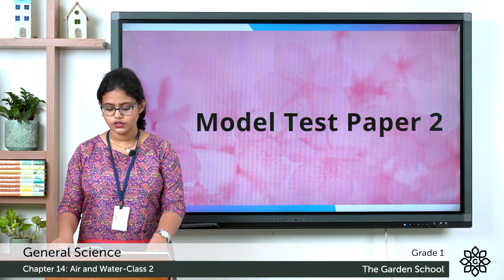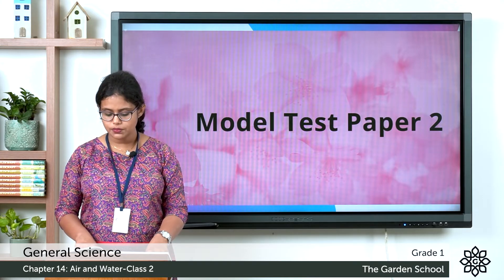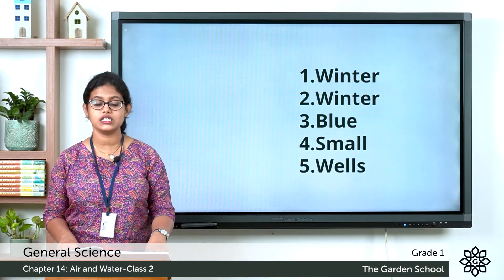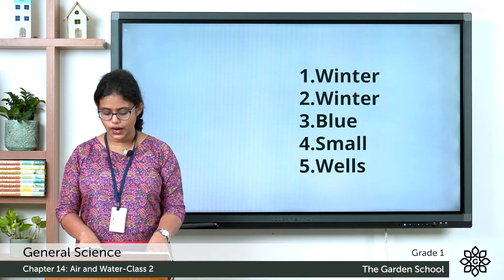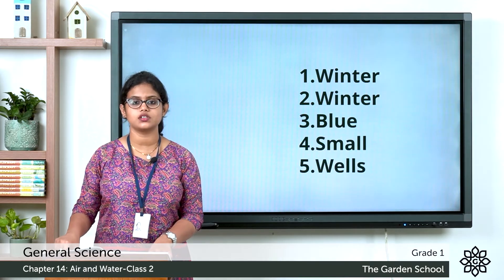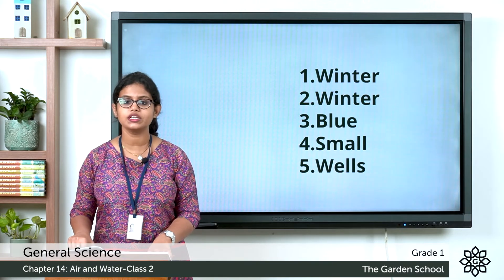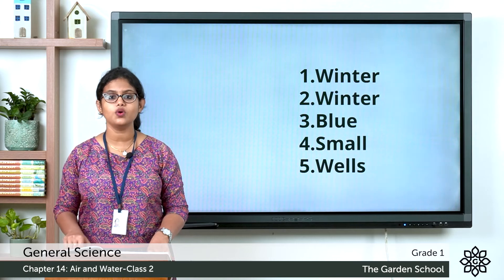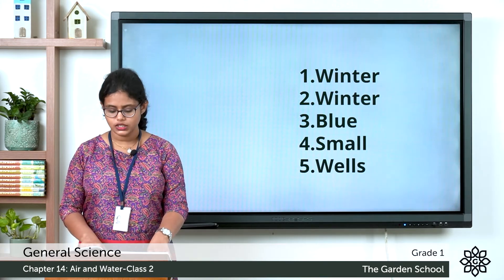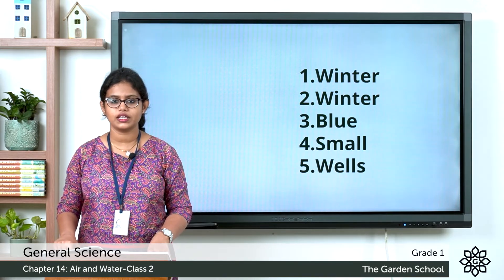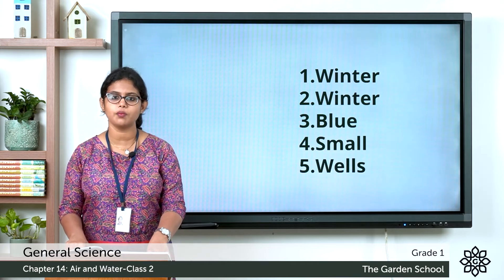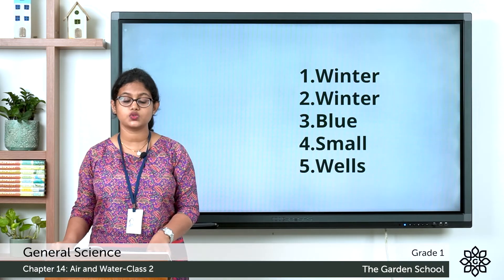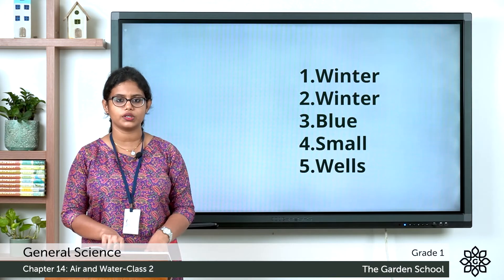Fill in the blanks. First one: summer, rainy and winter are three seasons. Second one: we feel cold in the winter season. Third one: the sky looks blue during the day. Fourth one: stars look small because they are far away. Fifth one: we get water from rivers, lakes and wells — these are the different sources from which we get water.